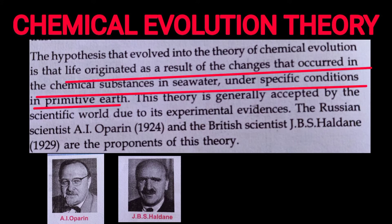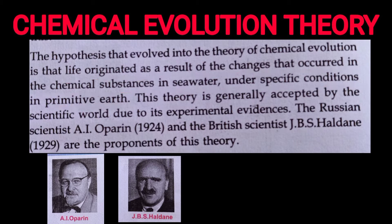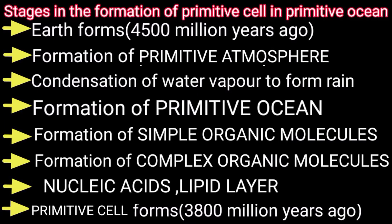Life originated as a result of changes that occur in chemical substances in sea water under specific conditions in primitive earth. This was proposed by Oparin and Haldane as the Chemical Evolution Theory. Under specific conditions on primitive earth, changes in chemical substances in sea water led to the origin of life.